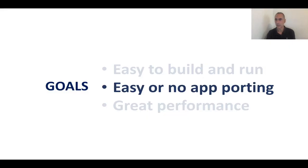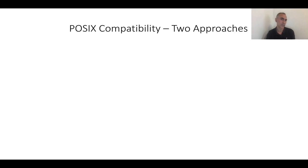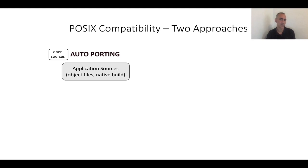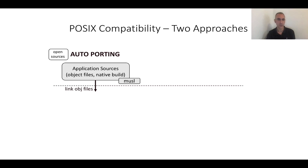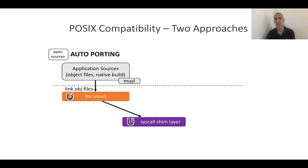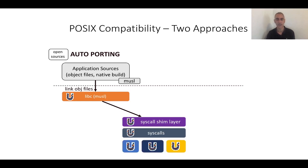The second goal is easy or no application porting. For this, we target POSIX compatibility and have two approaches. The first is called auto porting: this assumes we have open sources like SQLite or Nginx. We build with the native build system as you normally would, take the resulting object files — building against Musl — and link them into the Unikraft build process. We have our own ported Musl in Unikraft. Since Musl expects Linux underneath and will do syscalls, Unikraft has a module called the syscall shim layer. Under that, we have implementations of syscalls, but those syscalls go to our own Unikraft OS kernel modules, not to Linux.